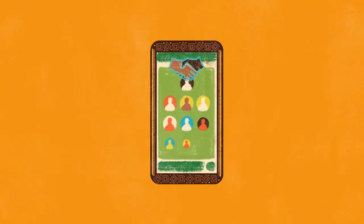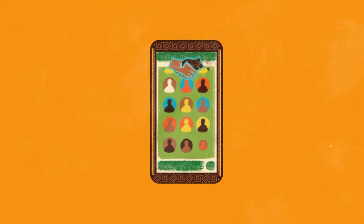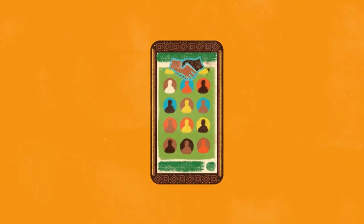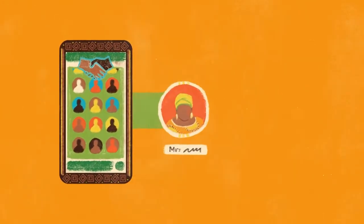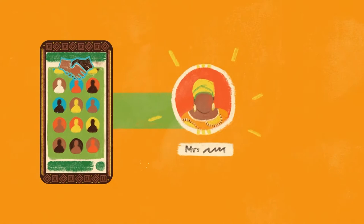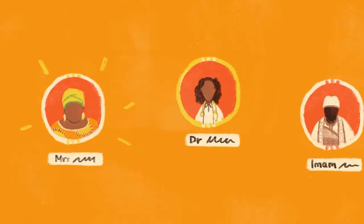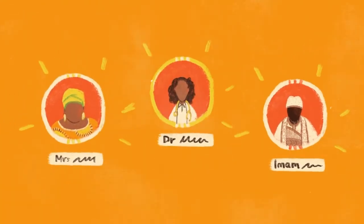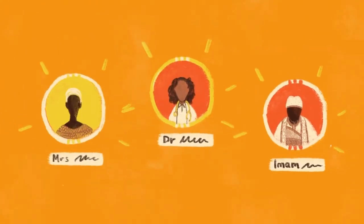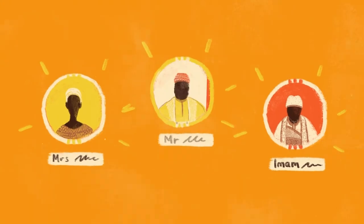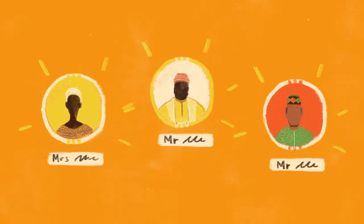Step 2: Agree on a list of important people who support your message that you want to get on radio and TV. These are influencers. It could be a religious leader, a doctor, a midwife, a village elder, or a chief — people the community respects.